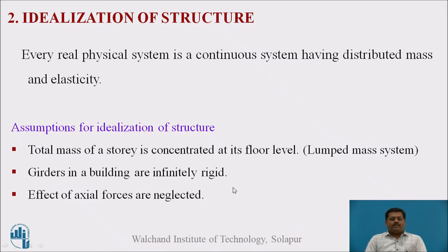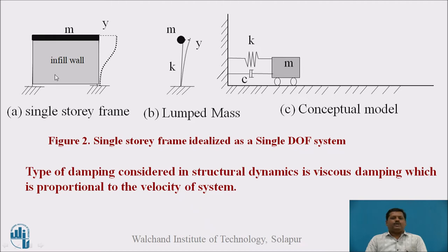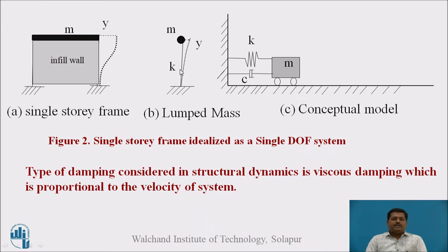The second assumption is that girders in a building are infinitely rigid. The third is that the effects of axial forces are neglected. The real example shown here is a single storey frame with infill wall. The entire mass of the storey is lumped at the floor level, shown as M. When the building vibrates, the deformed shape of the column is observed. Y is the displacement at the top of the girder. The single storey frame is converted into a lumped mass system, where K represents the stiffness of the two columns, M is the mass, and Y is the displacement.